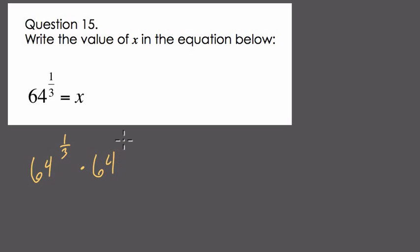let's multiply 64 to the one-third three times. 64 to the one-third times 64 to the one-third times 64 to the one-third. Now, if we did this, what would we get?